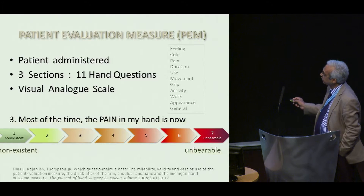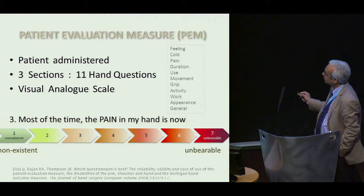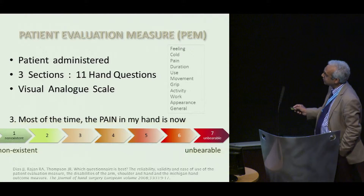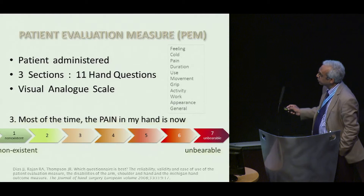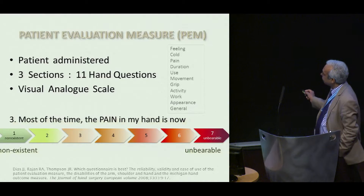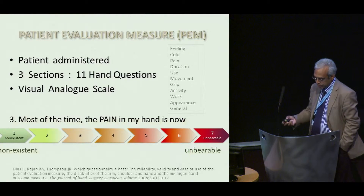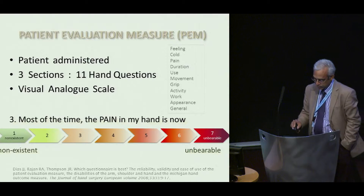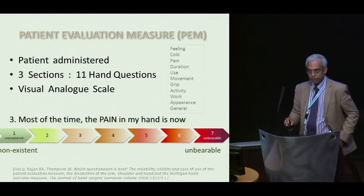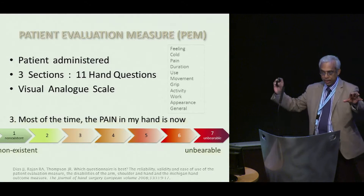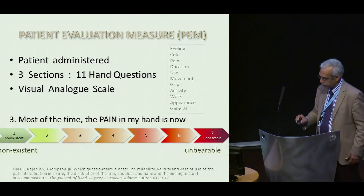This is an example where you've got: most of the time the pain in my hand is now. It's like a visual analog scale — it goes from non-existent, so no pain, to unbearable pain. You then score all of these and create a total outcome where zero is normal and 100 is severely abnormal.